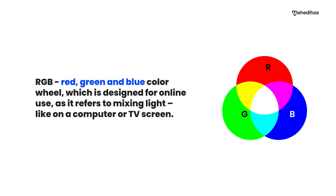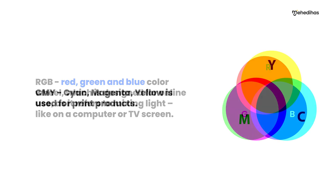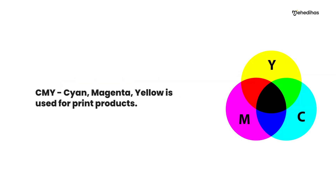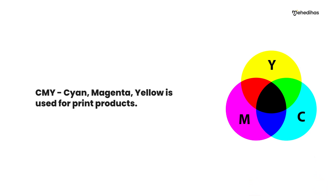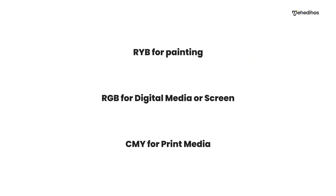RGB stands for red, green, and blue. It is the color wheel designed for online use as it refers to mixing light, like a computer or TV screen. CMY stands for cyan, magenta, and yellow, which is very important for printing. Printers also include black, making it CMYK. So: RYB for painting, RGB for digital media, and CMY for print media.